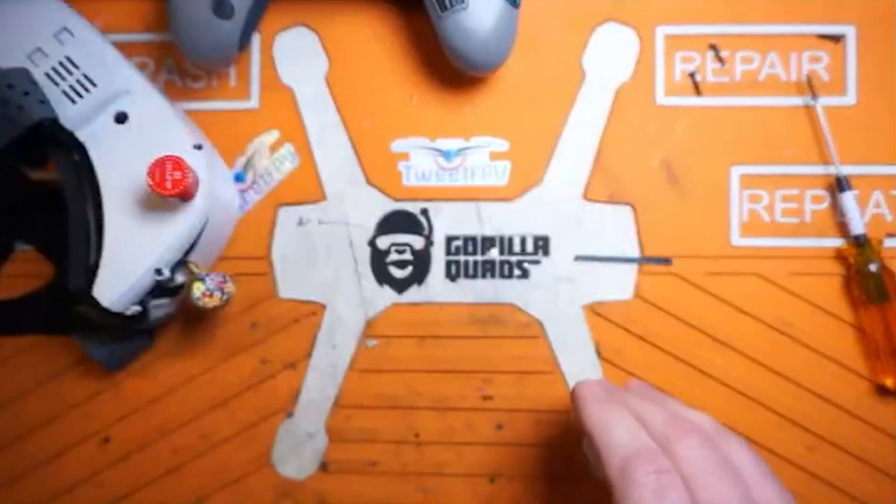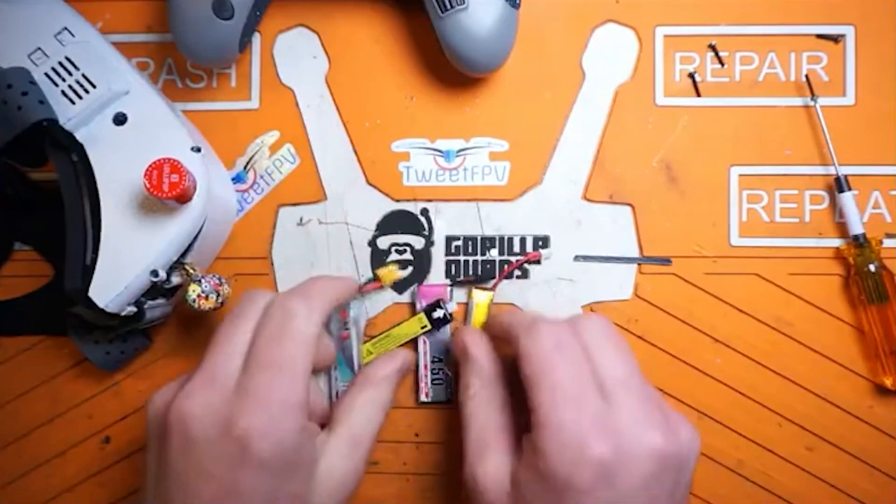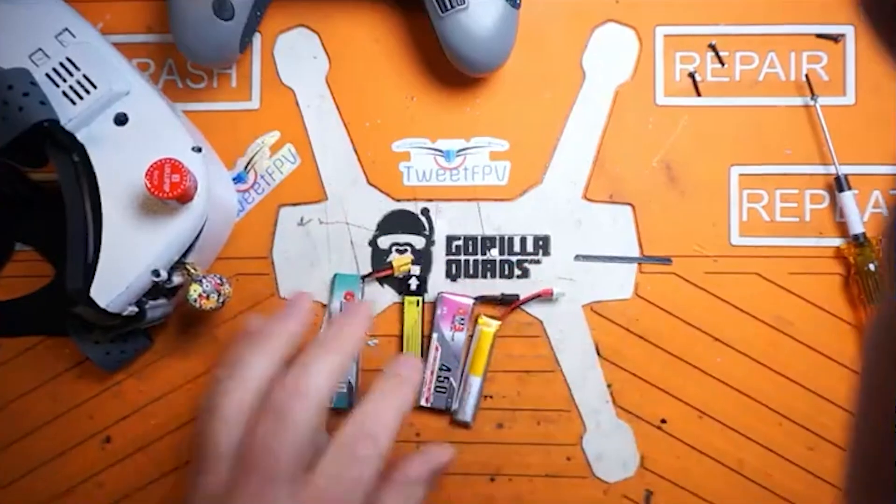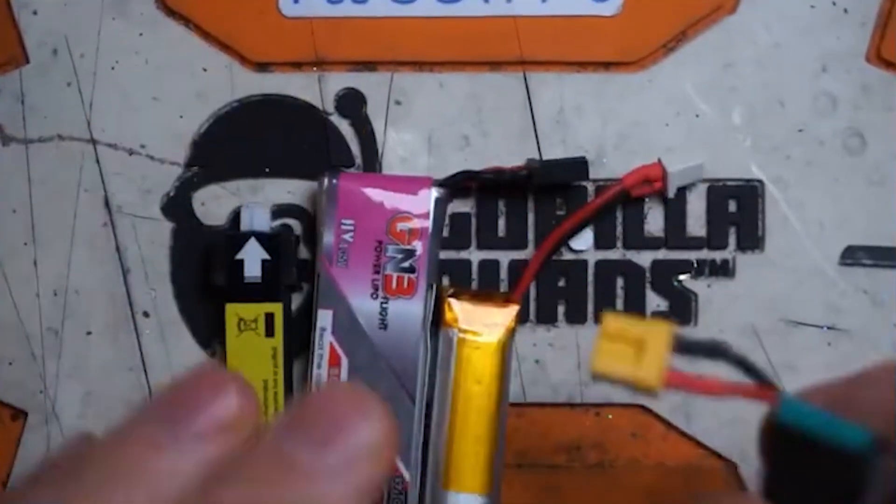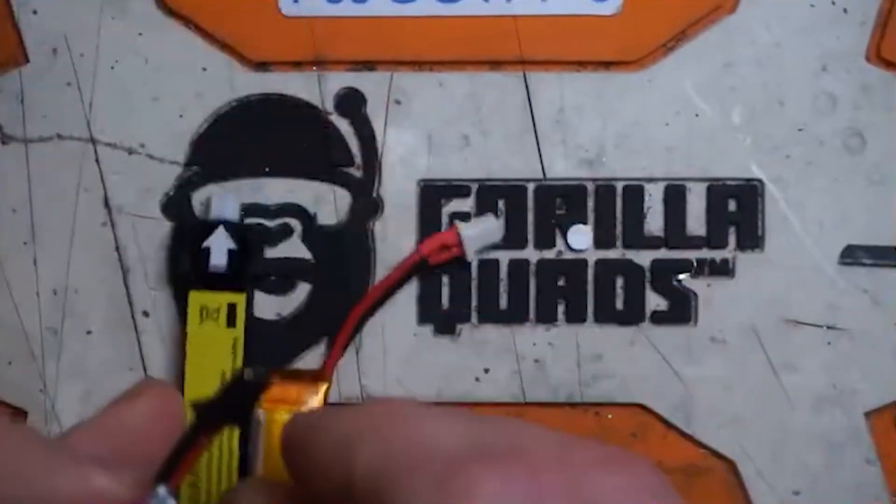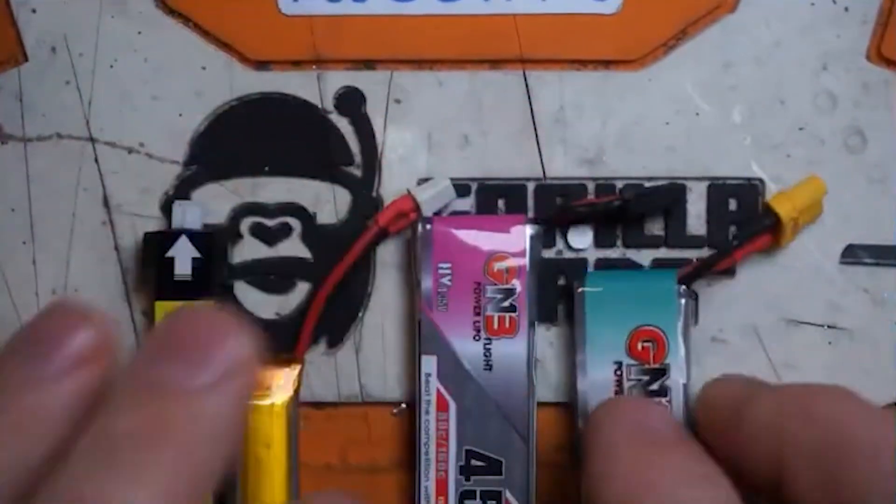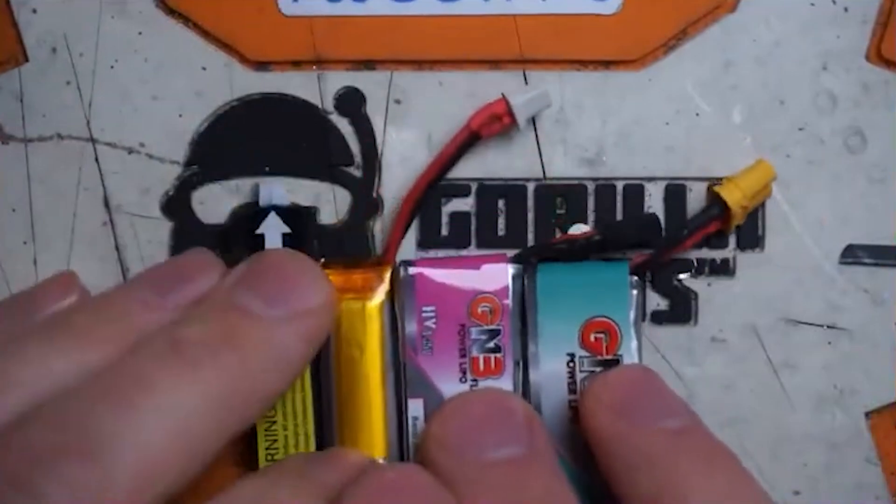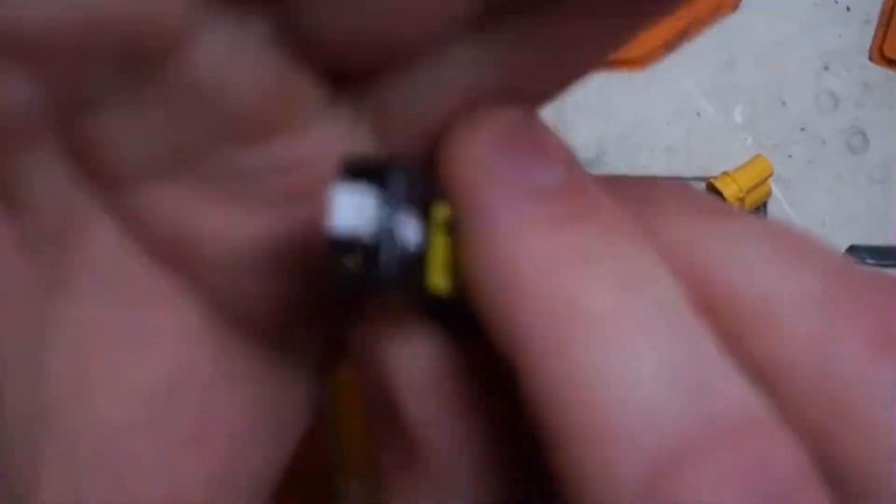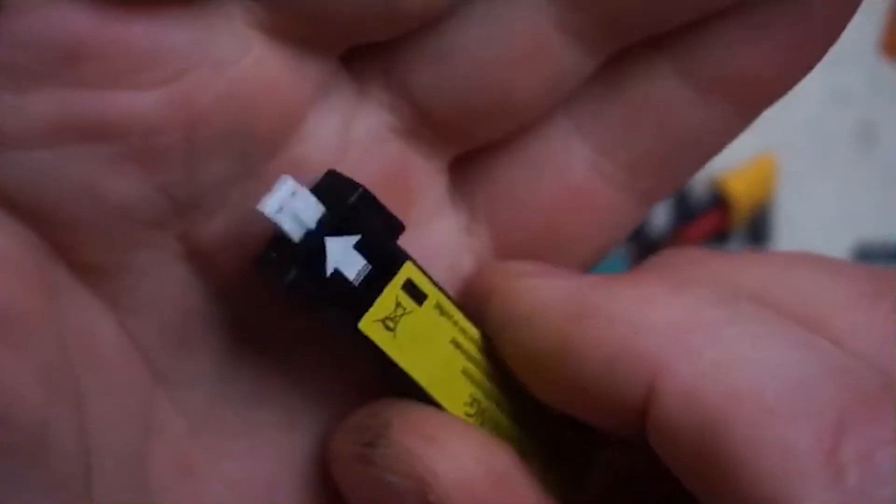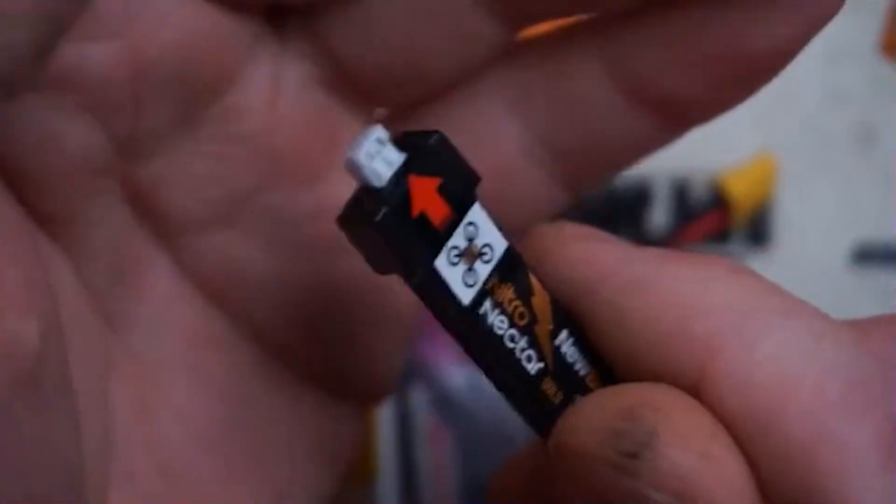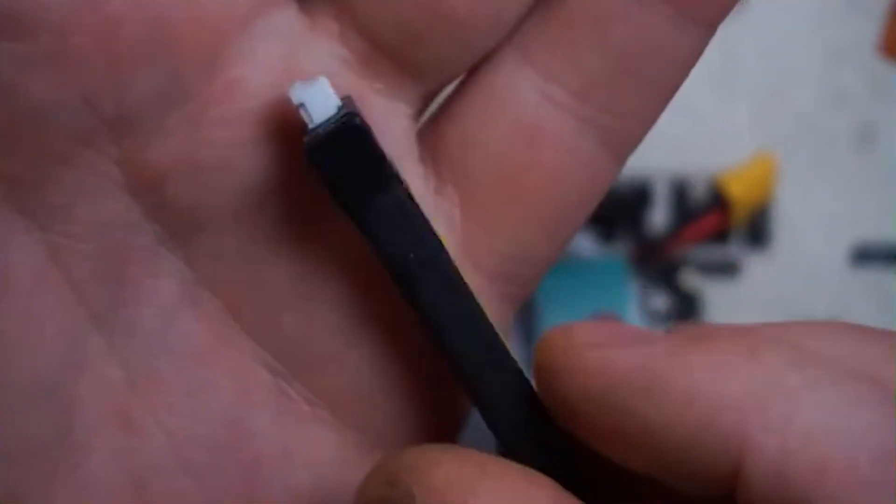All right, so as of right now there are basically four major connectors on the market. Let's arrange these by power output. Right here, this is the PH 2.0. There was a PH 1.7, but pretty much nobody uses that anymore, so I'm not including that. This is probably the most common connector on the market right now.